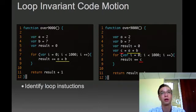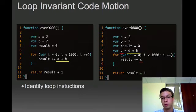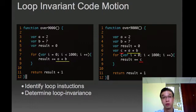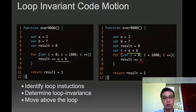There are three steps to the algorithm. One is identifying loop instructions. Then we need to determine whether these instructions are invariant within the loop. And then we need to move the instructions above the loop.